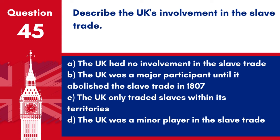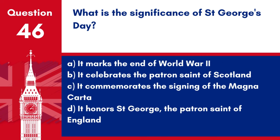Question 45. Describe the UK's involvement in the slave trade. A. The UK had no involvement in the slave trade. B. The UK was a major participant until it abolished the slave trade in 1807. C. The UK only traded slaves within its territories. D. The UK was a minor player in the slave trade. Answer: B. The UK was a major participant until it abolished the slave trade in 1807. The UK played a significant role in the transatlantic slave trade until its abolition in 1807.